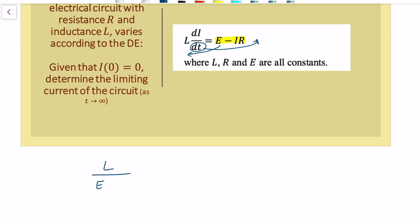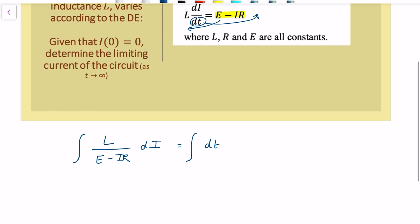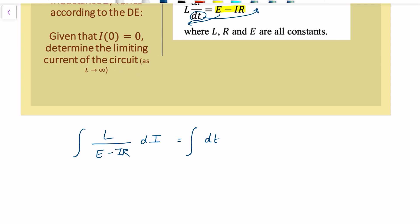We've got L over E minus IR, dI, and then on the right hand side we've just got dt and we put an integral sign on both sides. The only variables in this problem are the current I and time. I is the dependent variable and the reason for that we're told L, R, and E are constant. So when we're anti-diffing with respect to I on this left hand side we've got a linear function in the denominator.